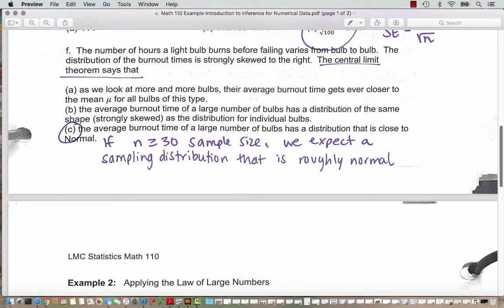Answer choice B we can rule out. That says the average burnout time of a large number of bulbs has a distribution of the same shape, strongly skewed as the distribution for individual bulbs. Well, we know that's not true because we know if you take a large enough sample, the sampling distribution becomes close to normal shape. So the correct answer is choice C.